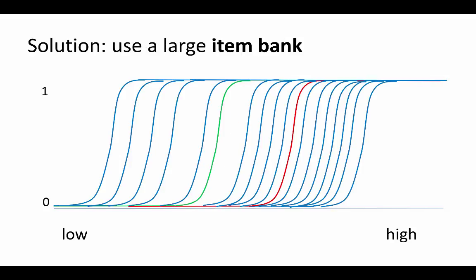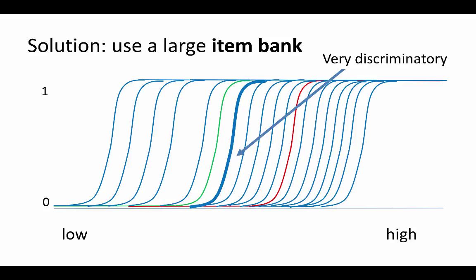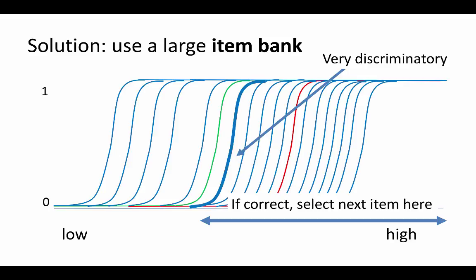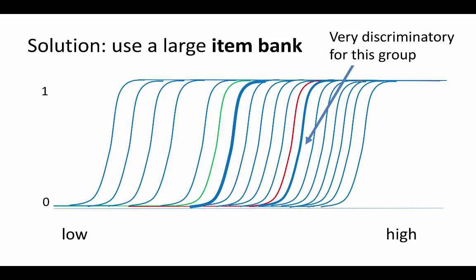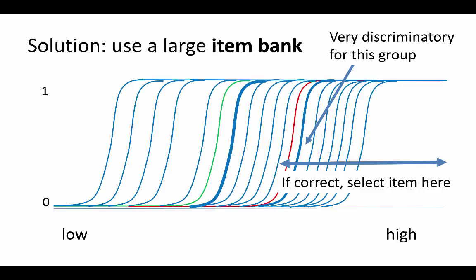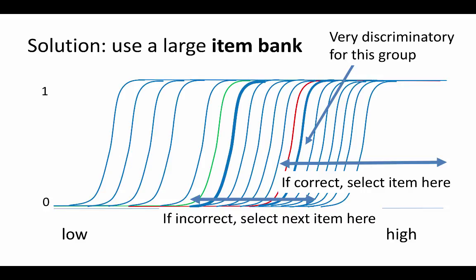If we want to use such a large item bank, we can start with an item that distinguishes between those on the left-hand side of the latent trait and those on the right-hand side — an item that is very discriminatory for the whole population. On the basis of this answer, we select a second item. If the individual answers correctly, they are probably somewhere in the higher range, so we select an item over there. If they answer incorrectly, we select an item in the lower range. Suppose the previous question was answered correctly — the next item is very discriminatory for that group, splitting it into two almost equally sized groups. If they answer correctly again, we select an item further right; if incorrectly, we select the next item for the intermediate range.